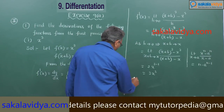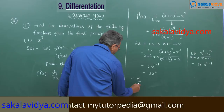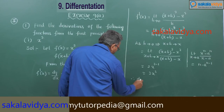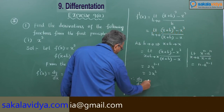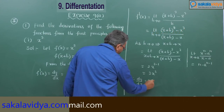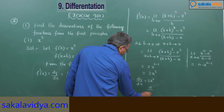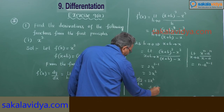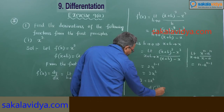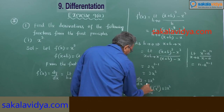Therefore, dy/dx equals 3x square, or d/dx of x cube equals 3 times x square.